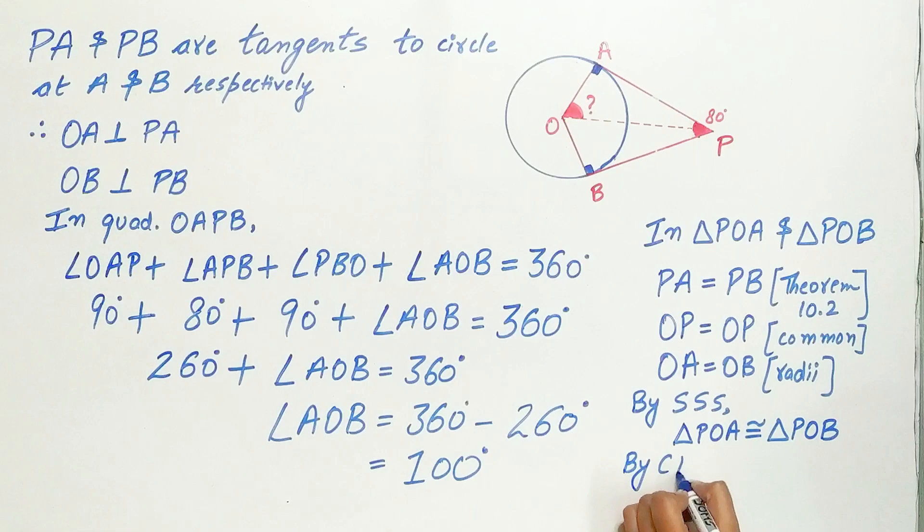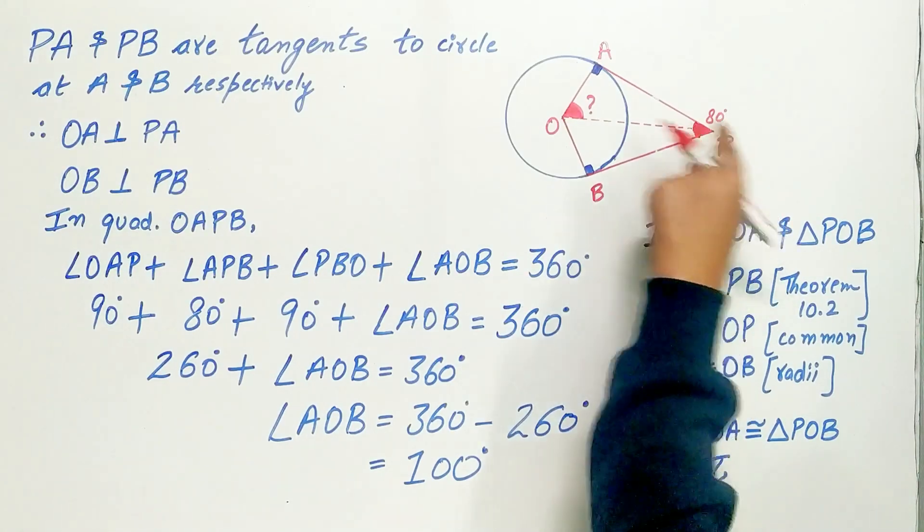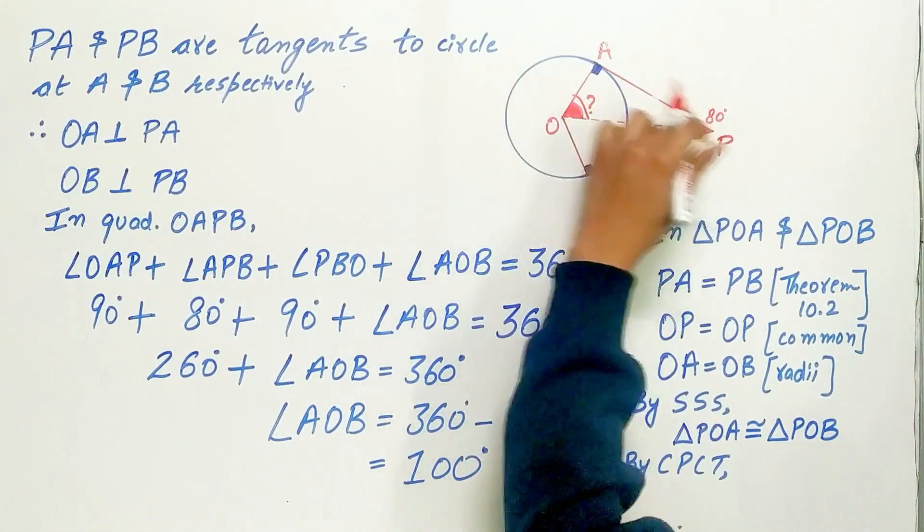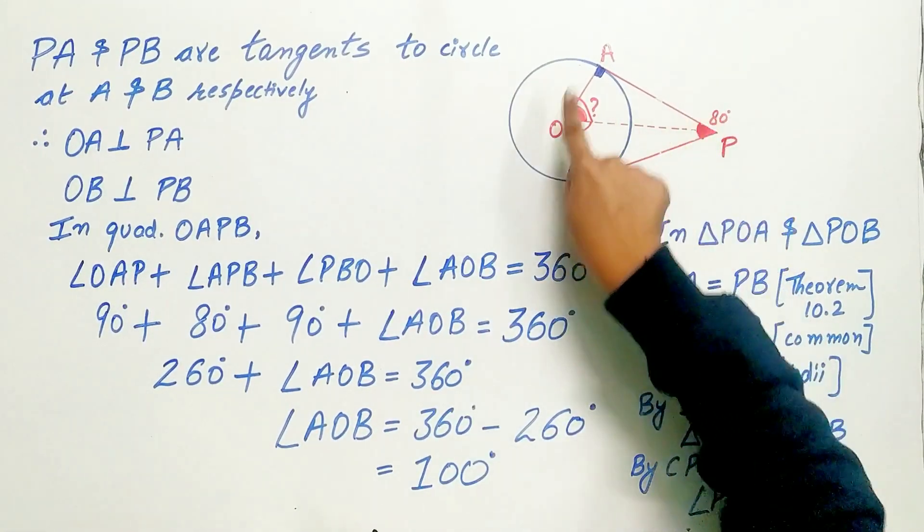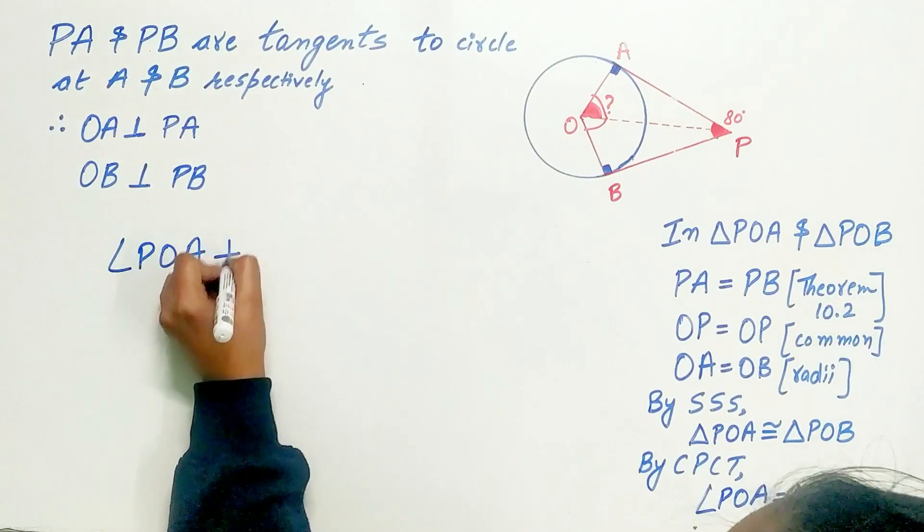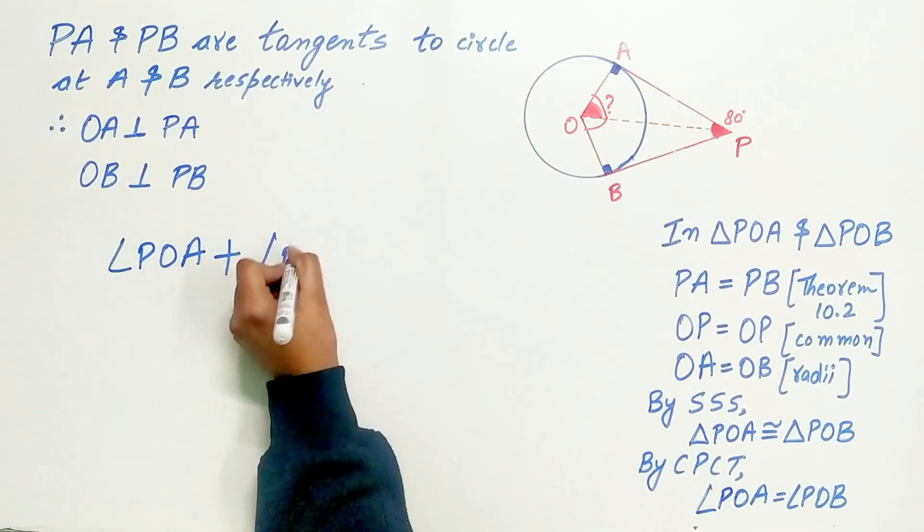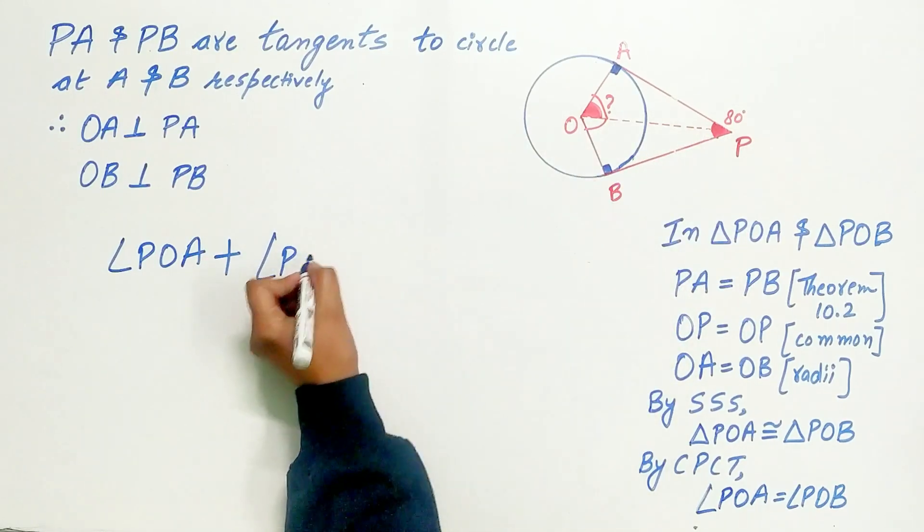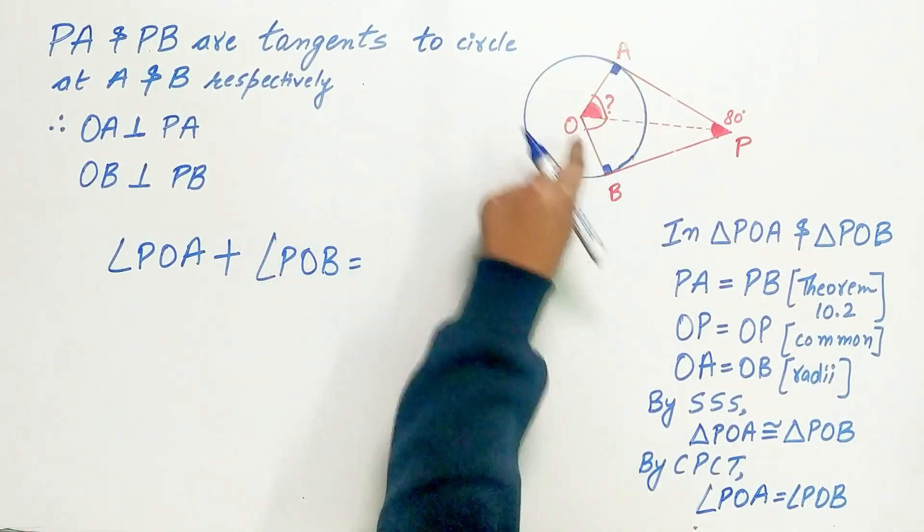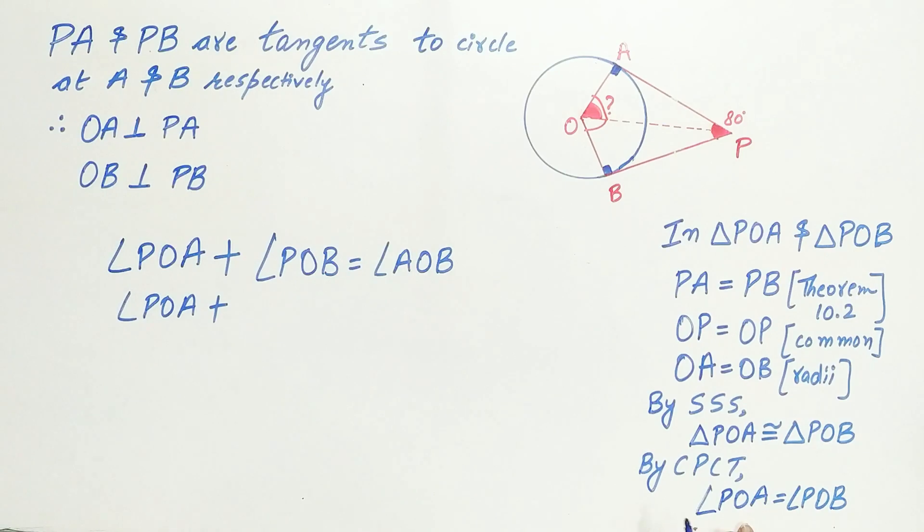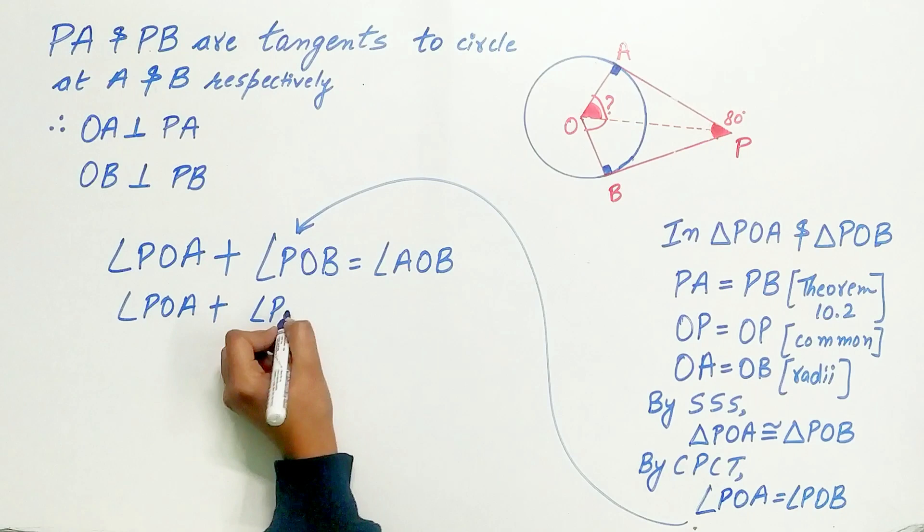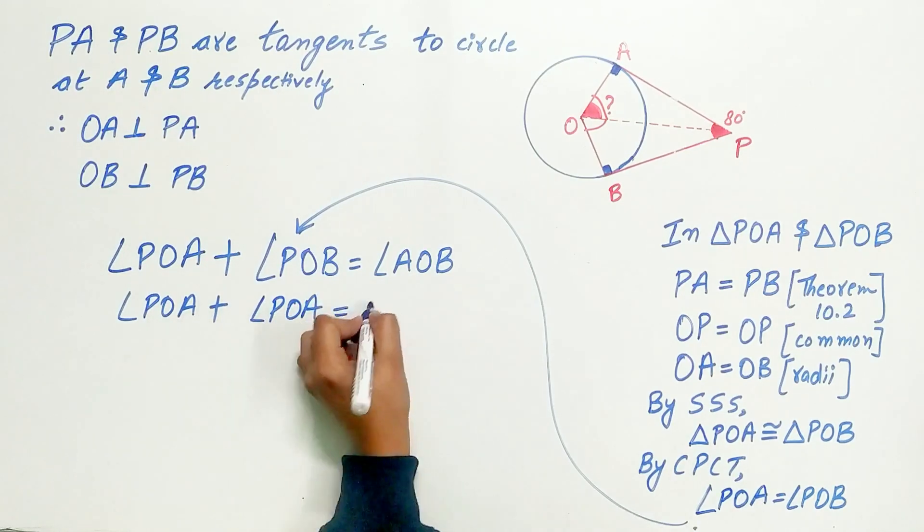And by CPCT, angle POA is equal to angle POB. Now, we are very close to find out angle POA. Angle POA plus angle POB is equal to angle AOB. Since angle POB is equal to angle POA, can I write angle POA in place of angle POB? Yes, is equal to angle AOB.